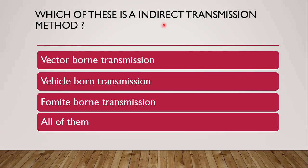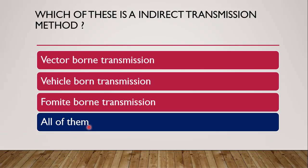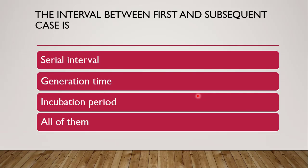Next question: indirect transmission method — whether it is vector-borne, vehicle-borne, fomite-borne, or all of them. The correct answer is all of them. Indirect transmission involves a vector, vehicle, or fomite for the transmission of disease.